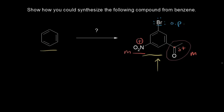When we try to figure out which of these groups was added last, it makes sense that the bromine was added last because this bromine is meta to both our nitro group and our acyl group. So we can go ahead and draw the precursor — we take the bromine off, leaving a benzene ring with an acyl group and a nitro group.